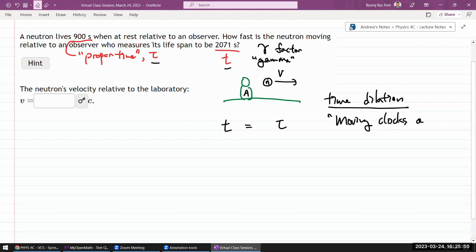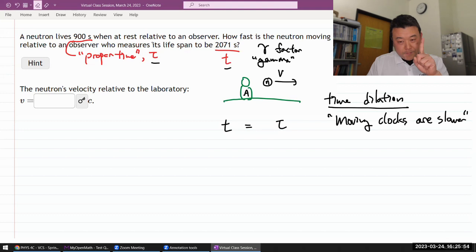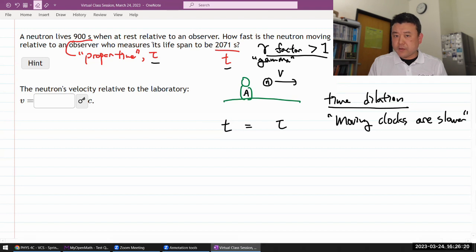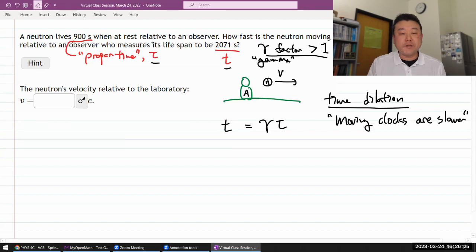Moving clocks are slower. And you should remember that the gamma factor is always greater than one. So if moving clocks are slower, then as that moving clock ticks down a time of one second, for you, the stationary observer wants to measure a time greater than one second so that that moving clock is slower. So thinking through that, my proper time is one, I want this to be greater than one. So my gamma factor must be here. That's how I remember it.